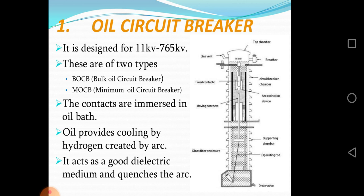There are two types: BOCB (bulk oil circuit breaker) and MOCB (minimum oil circuit breaker). The contacts are immersed in an oil bath. Oil provides cooling by hydrogen created by the arc; it acts as a good dielectric medium and quenches the arc.